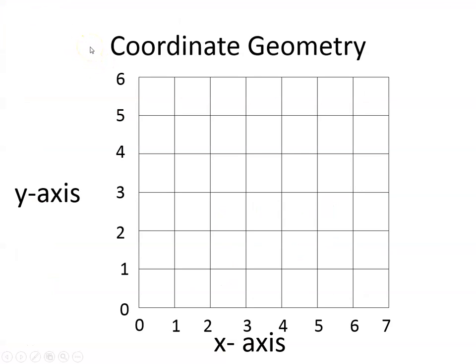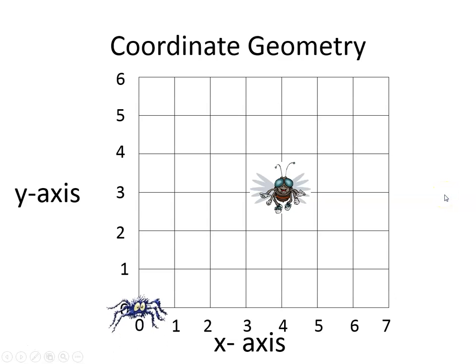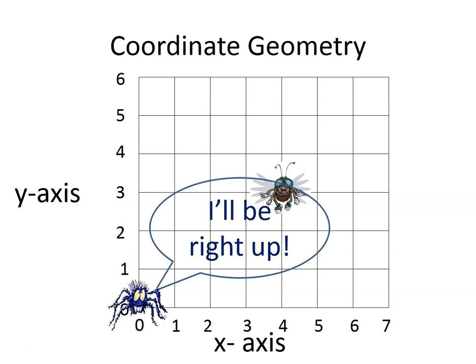We're working with coordinate geometry in the first quadrant. You can see we have an x-axis going sideways and a y-axis going up. We have a fly on one of the spots and a spider who's going to start at the origin. The spider always starts at the origin and climbs until he gets to the fly. He always says 'I'll be right up' because that's the order he moves in.